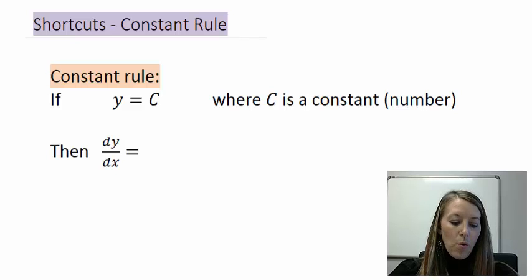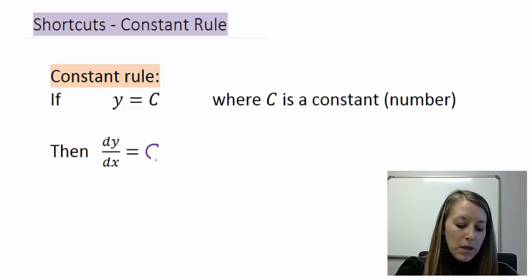If we have the equation y equals c, where c is a constant, meaning it's just a number, then the derivative of our constant is going to be zero.